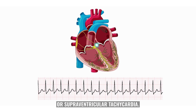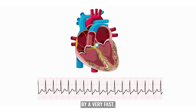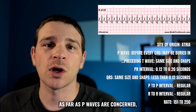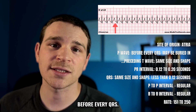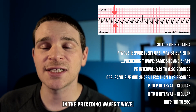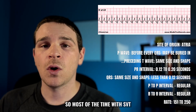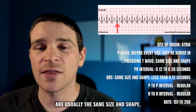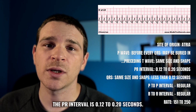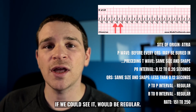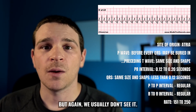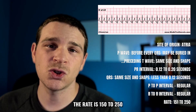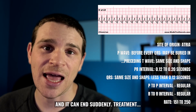SVT, or supraventricular tachycardia, is characterized by a very fast, narrow complex tachycardia. The site of origin is the atria. There are technically P waves before every QRS, however they are usually buried in the preceding T wave, so most of the time with SVT you're not going to see the P wave. The QRS is usually the same size and shape, the R to R interval is regular, and the rate is 150 to 250. It starts suddenly and can end suddenly.